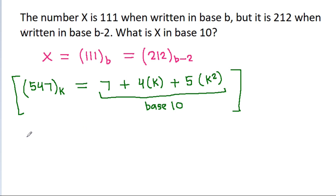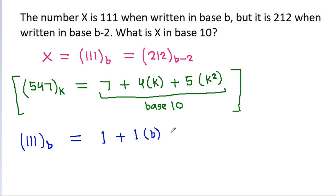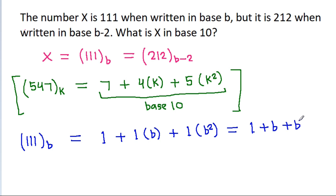So 111 in base b will be equal to 1 plus 1 times b plus 1 times b squared, that is equal to 1 plus b plus b squared.